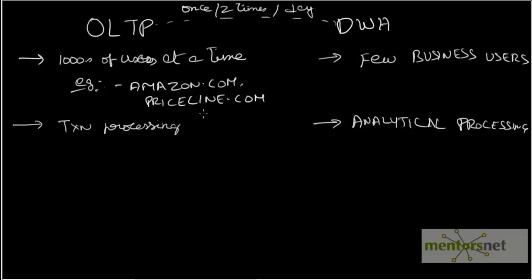Whereas in data warehouse, very few business users are connected to the data warehouse at any point of time. But they are running very complex, huge analytical queries like last quarter, what is the sale of a particular product in a particular region. That involves a lot of aggregation and the query is quite complex and long running. So this is optimized for analytical processing.